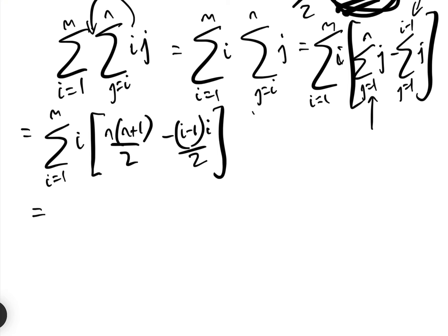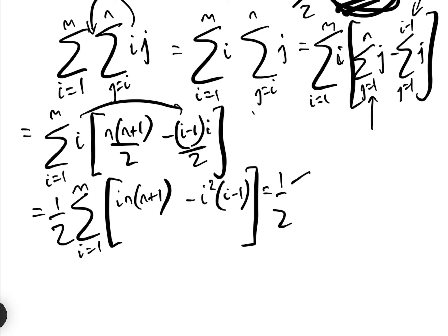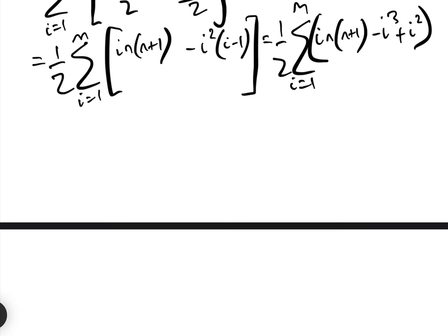Let's take the half out, which gives us one half times the sum between i equals 1 and m of i times n times n plus 1, minus i times i minus 1. Collecting terms, that equals a half times the sum between i equals 1 and m of i·n(n+1) minus i cubed plus i squared. So now at least we have a single summation in i.